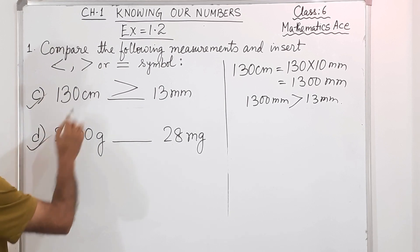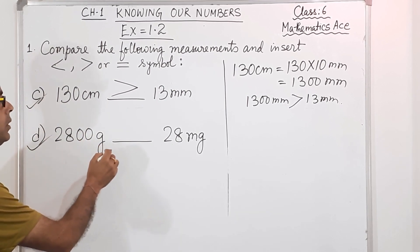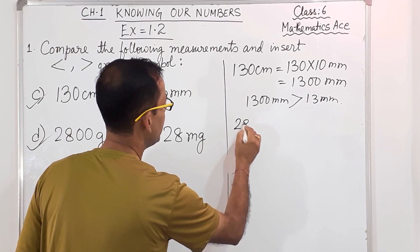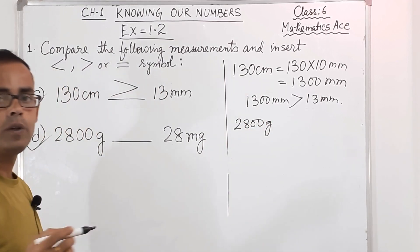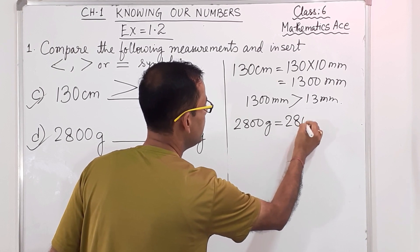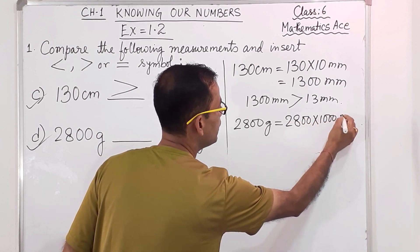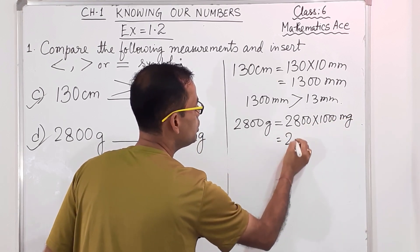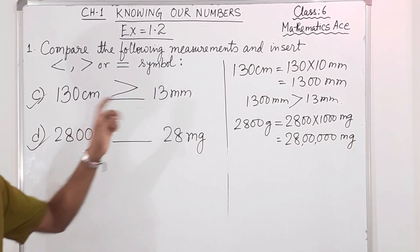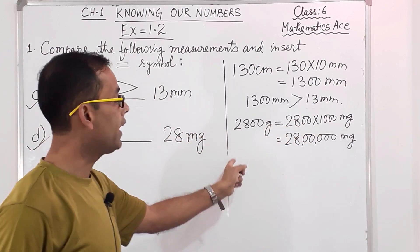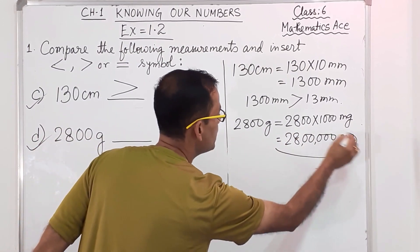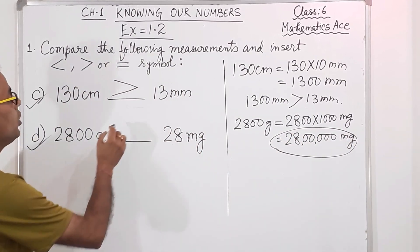Then number D: 2,800 gram versus 28 milligram. We will make the units same. So 2,800 gram — from gram to milligram I have to multiply. 2,800 into 1,000 becomes 2,800,000 milligrams. Why? Because gram, then decigram, then centigram, then milligram — you multiply by 1,000. So obviously 2,800,000 is bigger than 28 milligram — it will be greater than.